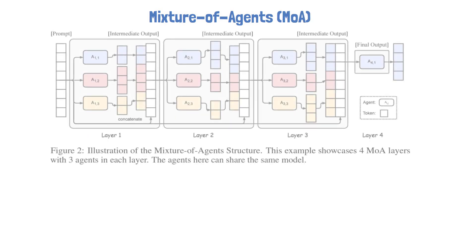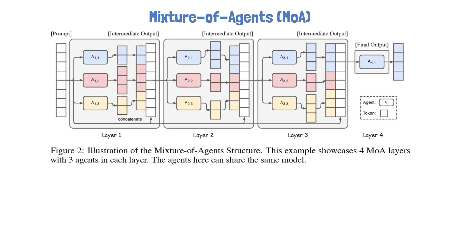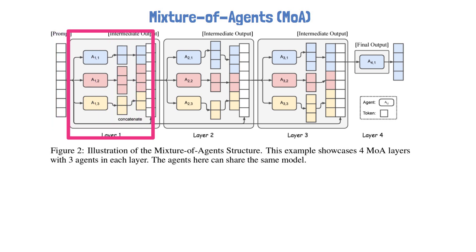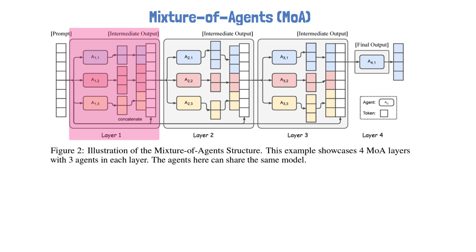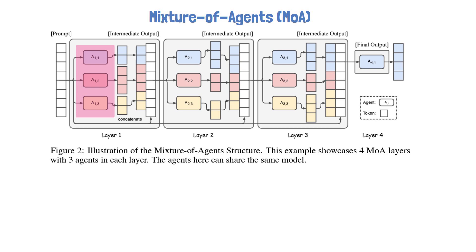To understand how the Mixture of Agents method works we use the following figure from the paper. Mixture of Agents is composed of multiple layers. On the left we have an input prompt, which is first being fed into the first MOA layer. Each layer has multiple LLMs — in this example we have 3 LLMs, each marked with the capital A. A1,1 for the first LLM in the first layer, A1,2 for the second LLM in the first layer, and so it goes. Each LLM gets the input prompt and yields a response.